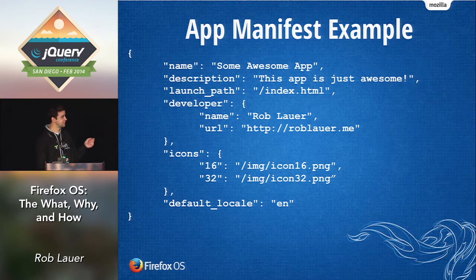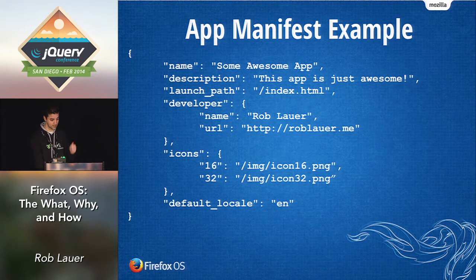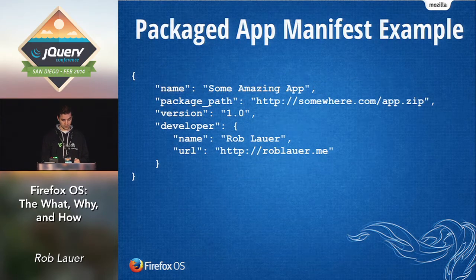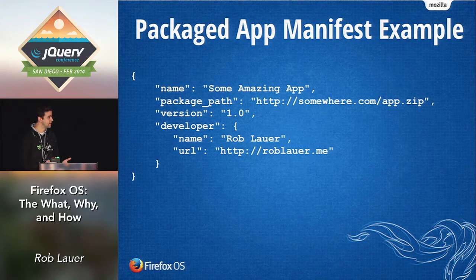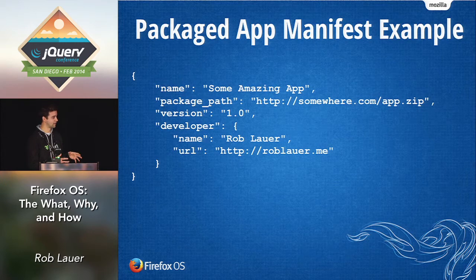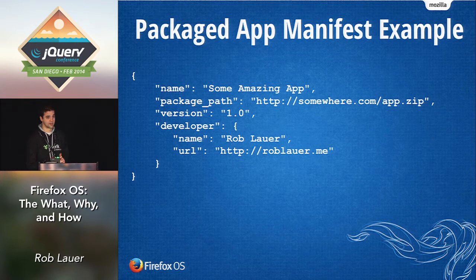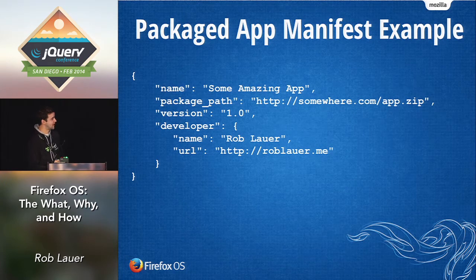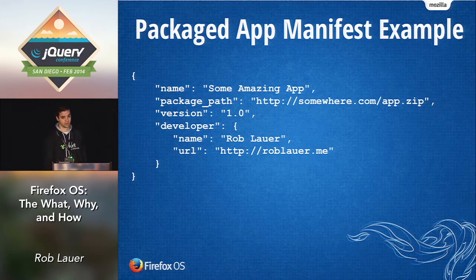There's a lot more you can add — for example, if you need to request permissions for privileged APIs, those go here as well. For a packaged app manifest, you package your HTML5 app in a zip archive along with the inner manifest file. The outer manifest stays outside the archive and simply points to that package, providing a name, a literal path to the package, a version number, and developer information. That's all you need — really, really simple.